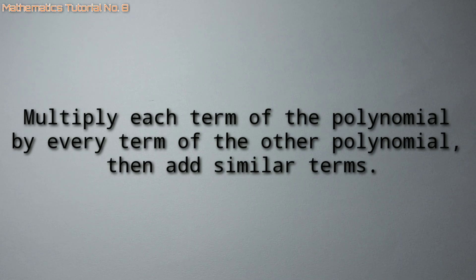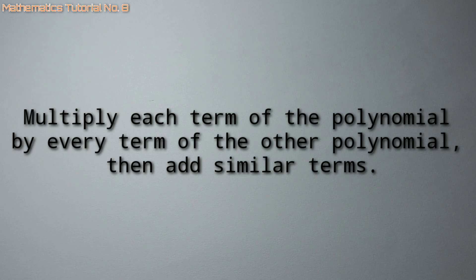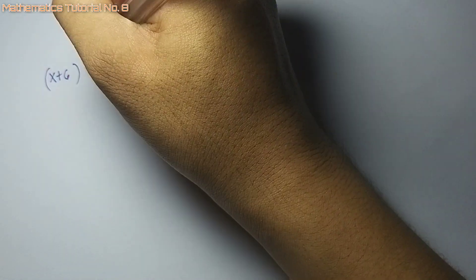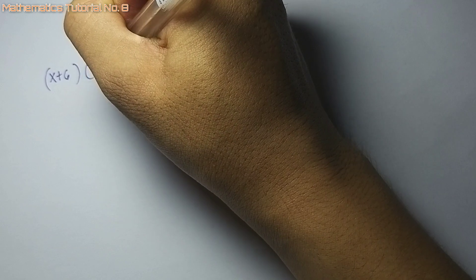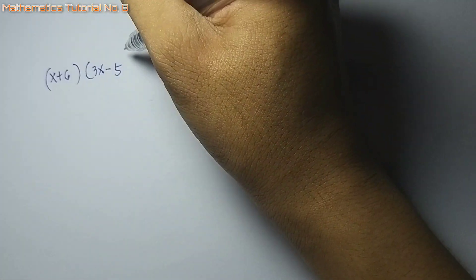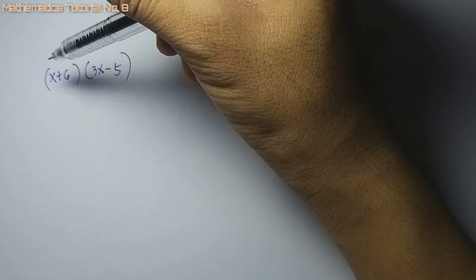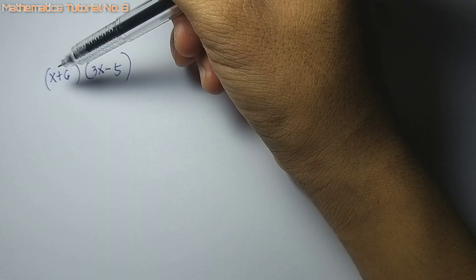Pag mag-multiply ng polynomial, dapat ang tanan terms sa atong polynomial ma-multiply sa tanan terms dito sa picas nga polynomial. Pagka human, i-add na ang parihas o similar terms. So for example, x plus 6 i-multiply sa 3x minus 5.